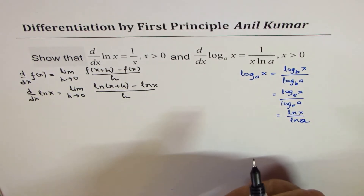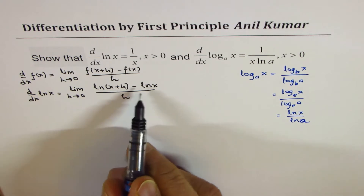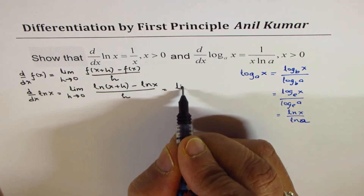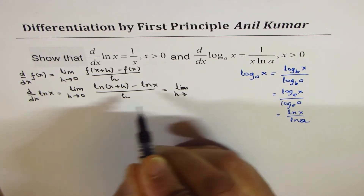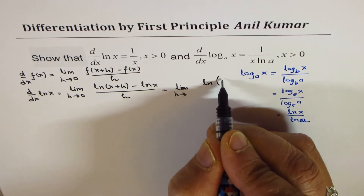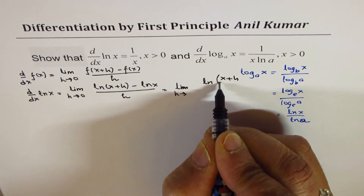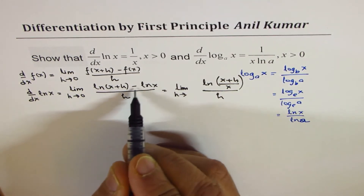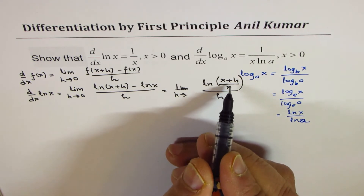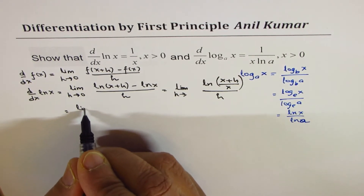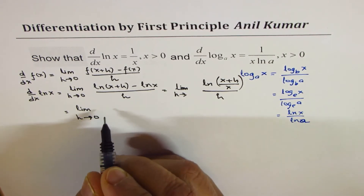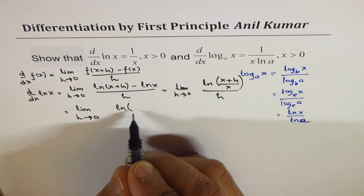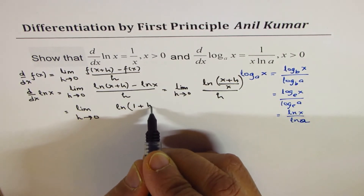Applying the properties of logarithms, the difference of logarithms can be written as a quotient. So we get the limit as h approaches 0 of ln((x + h) over x), which simplifies to the limit as h approaches 0 of ln(1 + h/x) over h.